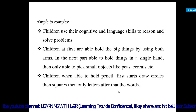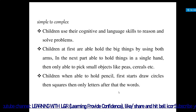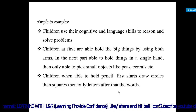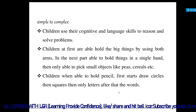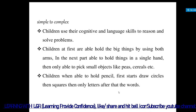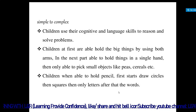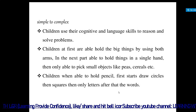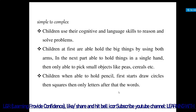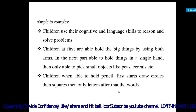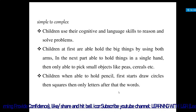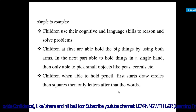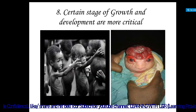We also saw the earlier example: first the child holds the ball with both hands, then with one hand, and as skills develop further, the next milestone is that children, when able to hold a pencil, first start to draw circles, then squares, then only letters, and after that words. That is the simple-to-complex principle.